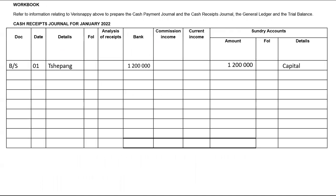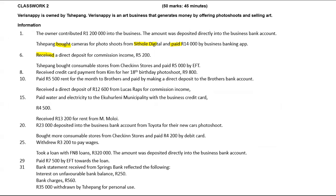Commission received means we are receiving money for commission income, so it will be recorded in the CRJ. You will write BS, the date will be the sixth. The bank will have 5,200 and commission income will also be 5,200. Because it's a direct deposit, that's why it doesn't go under analysis.